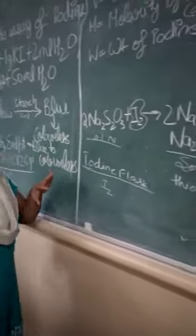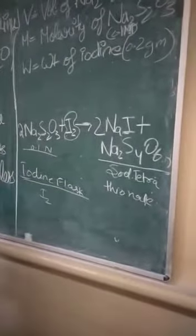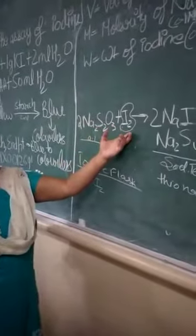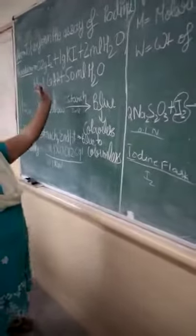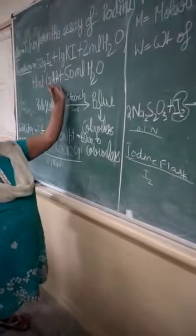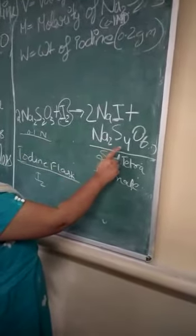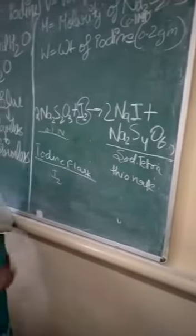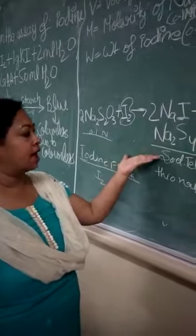The theory behind this titration is that sodium thiosulfate, which is present in the burette, will react with iodine, which is generated in the conical flask with the addition of all these components. Both of these will react together to give sodium tetrathionate, which is the final product of this chemical reaction.